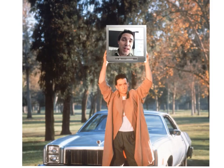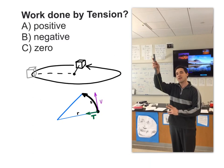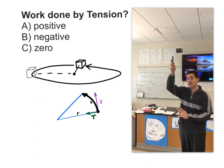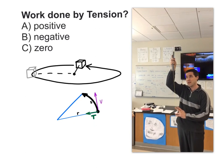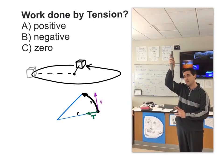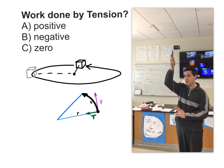Now that we've covered work, let's check our understanding. I'd like to know about the work done by tension as this mass travels in a circle at a constant speed. Is it positive work, negative work, or zero work?